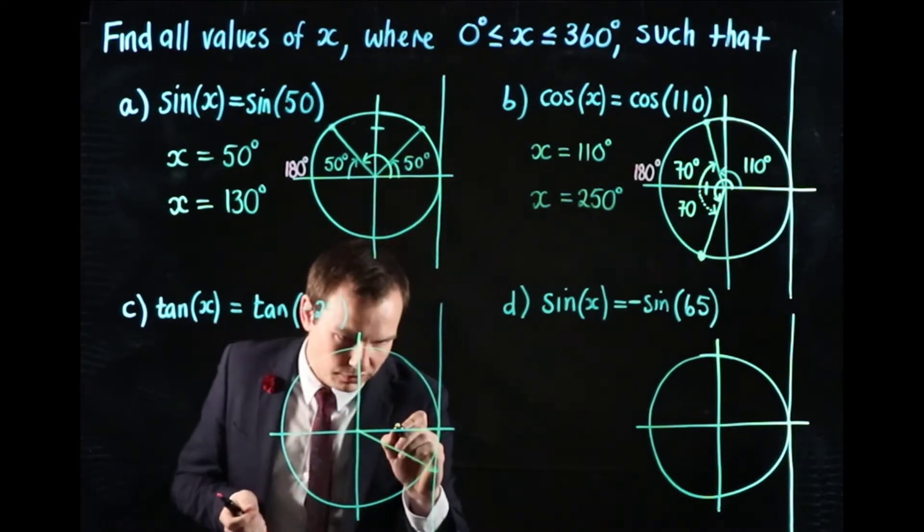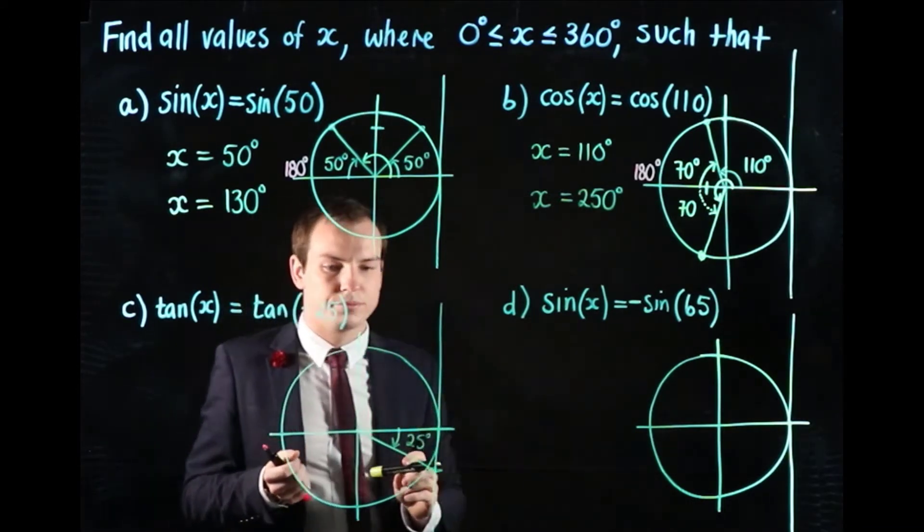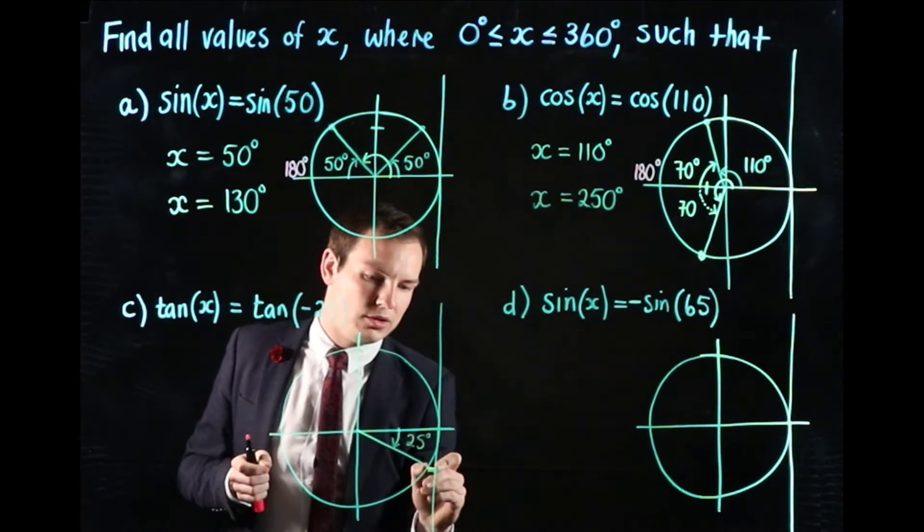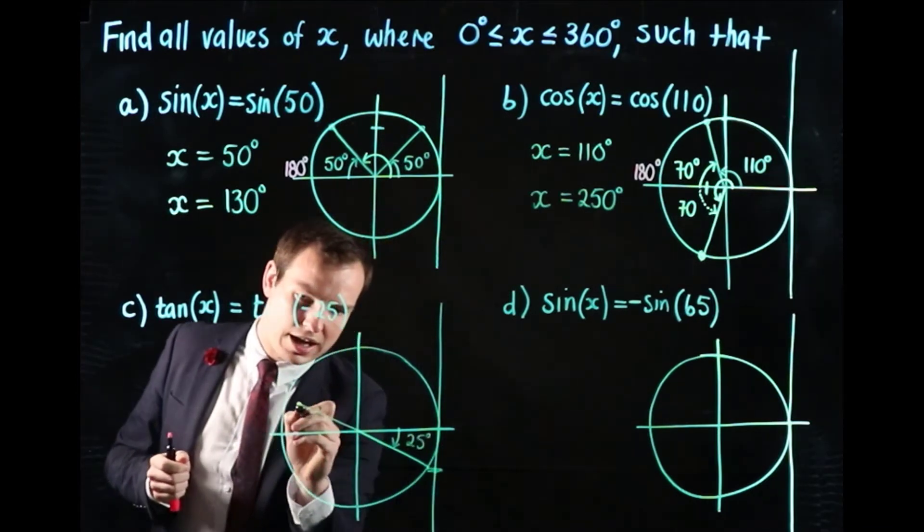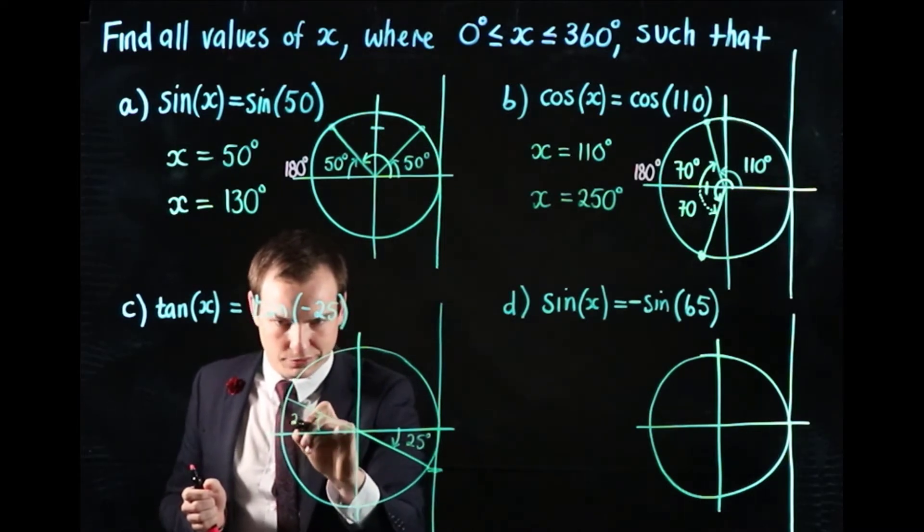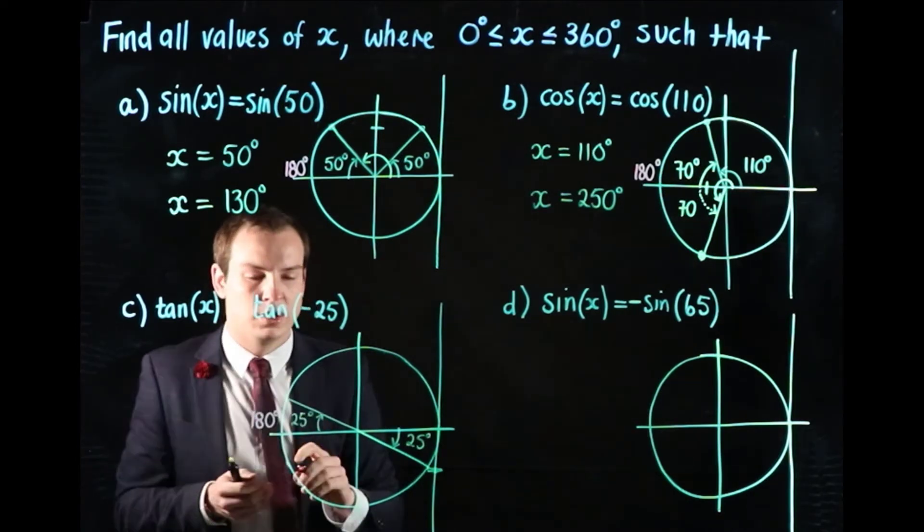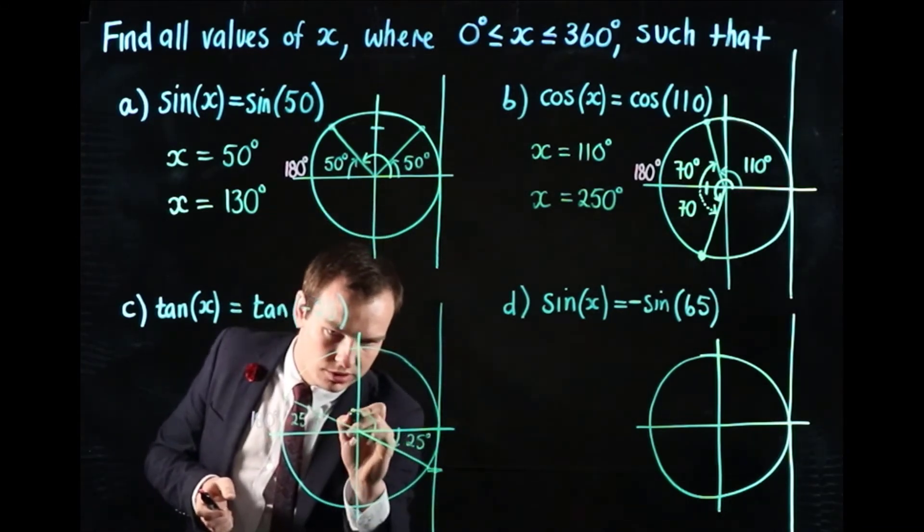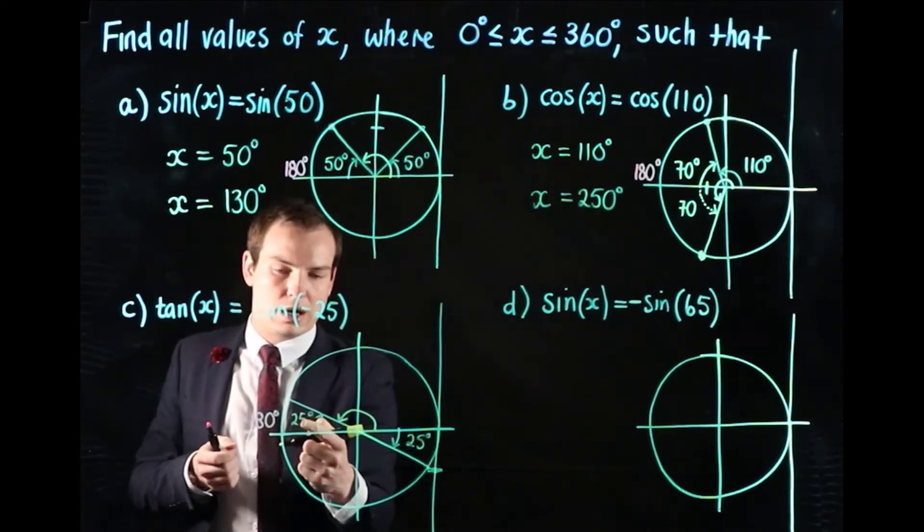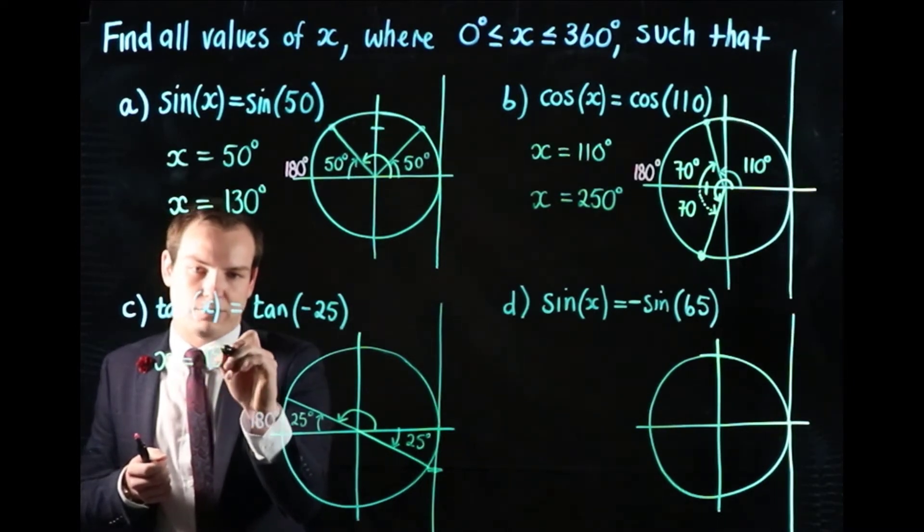That is 25 degrees between the horizontal and the line drawn there. Now we want to find all values of x between 0 and 360 such that we get the same tan value. We could extend this line up into our second quadrant, and that would be 25 degrees back from the 180. So if we went from 0 to this point here, we'd get a tan value equal to tan of negative 25. We do 180 and subtract 25, which takes us to 155 as one of our answers. So x is 155 degrees.